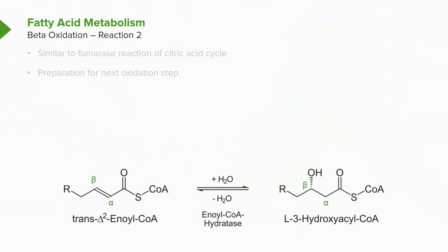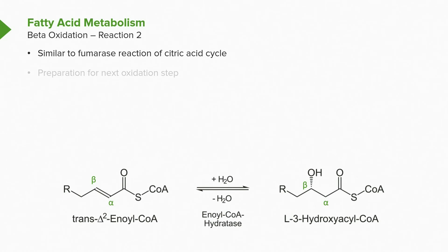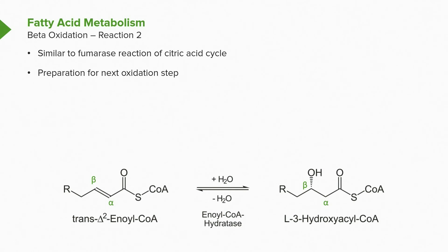Enoyl-CoA hydratase creates a molecule with a hydroxyl group on the beta carbon (carbon number 3) in the L configuration. This reaction is similar to a reaction that occurs in the citric acid cycle — in fact, this reaction and the next two reactions are very similar to citric acid cycle reactions. This sets up an oxidation that will occur in the next step.